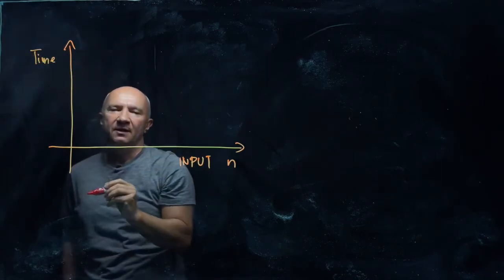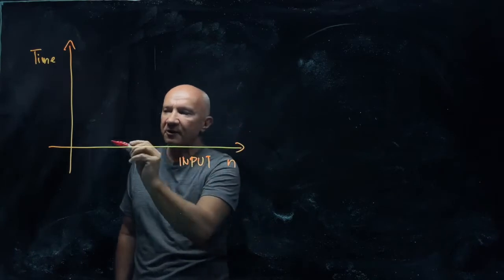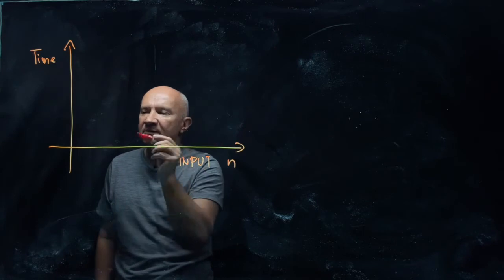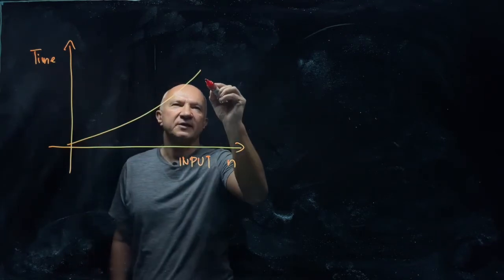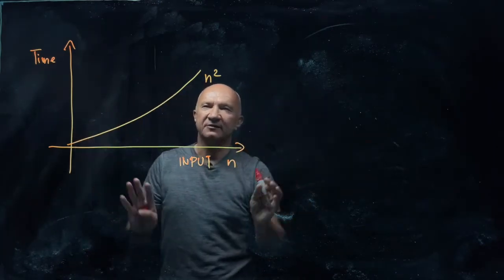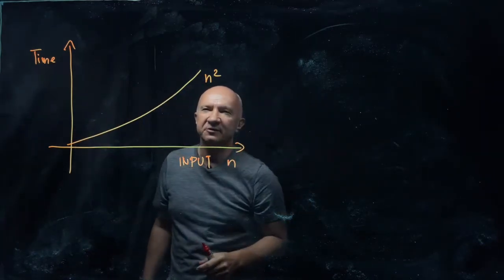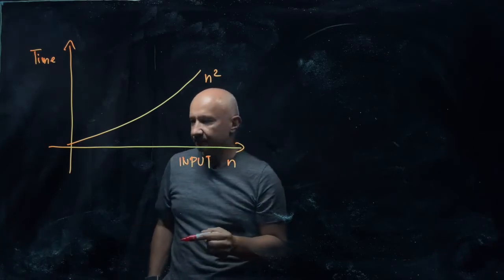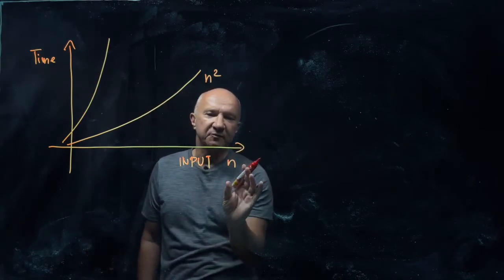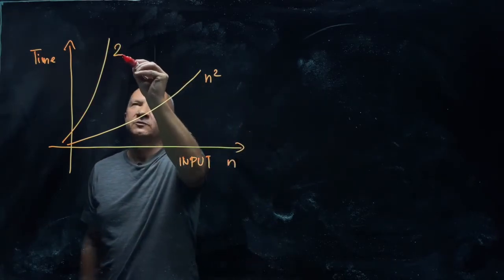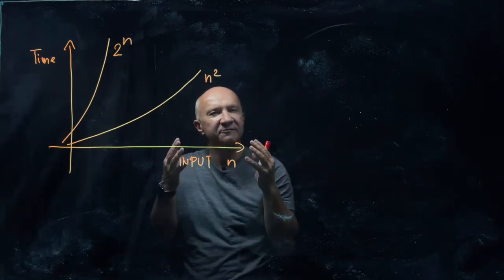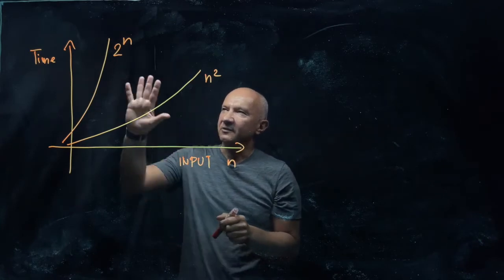Now when it grows like logarithmic, linear, at most polynomial function of the size of the input, say n squared, then computer scientists say, well great, fantastic, this is a good algorithm - the execution time doesn't grow too fast, we can handle it. However, whenever it goes as the exponential function of the size of the input, say 2 to the n, then computer scientists are not happy. Well, you know, we know how to solve the problem but it's not an efficient way of solving the problem.